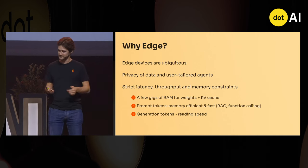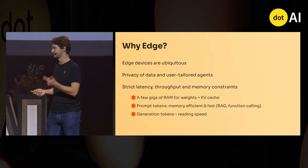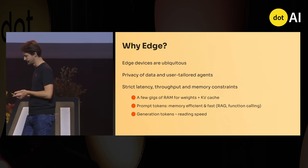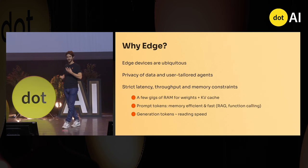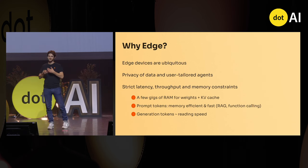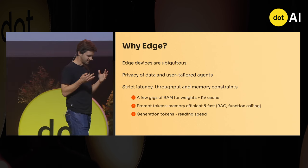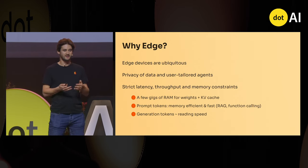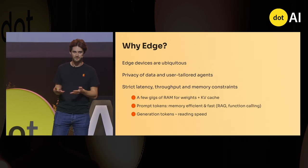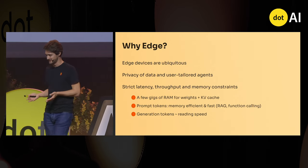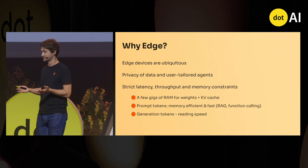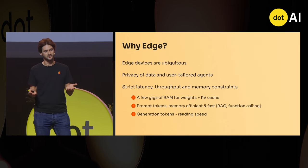Smartphones, smart glasses, laptops, and really any device or object that has some compute and is embedded into your house, your bike, whatever. The key property of those devices is that they follow you everywhere you go, by design, because they want to act and to help you on your day-to-day.